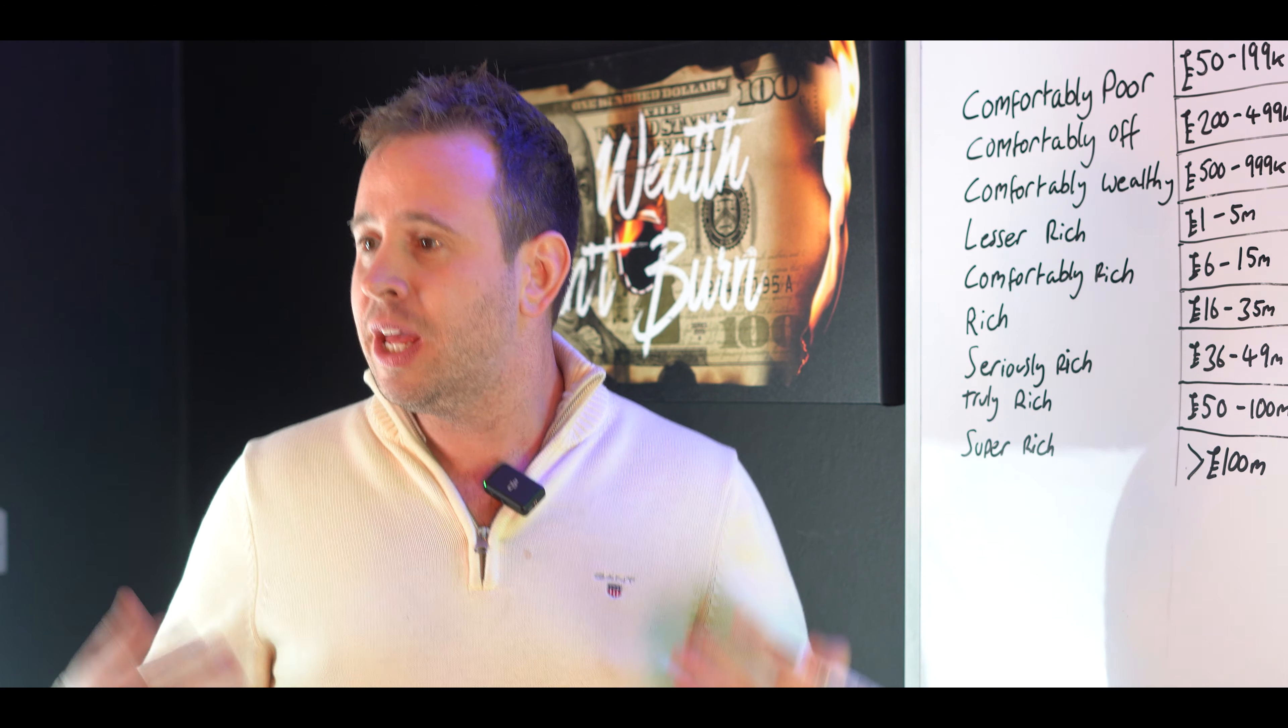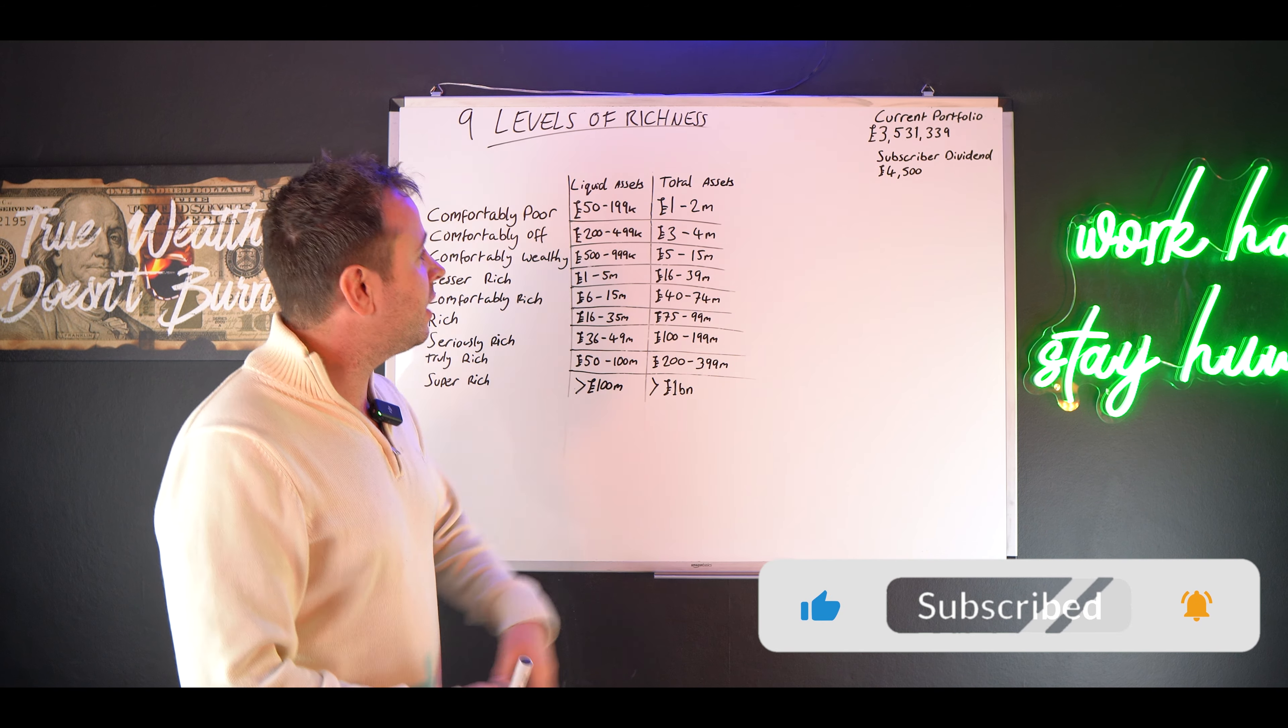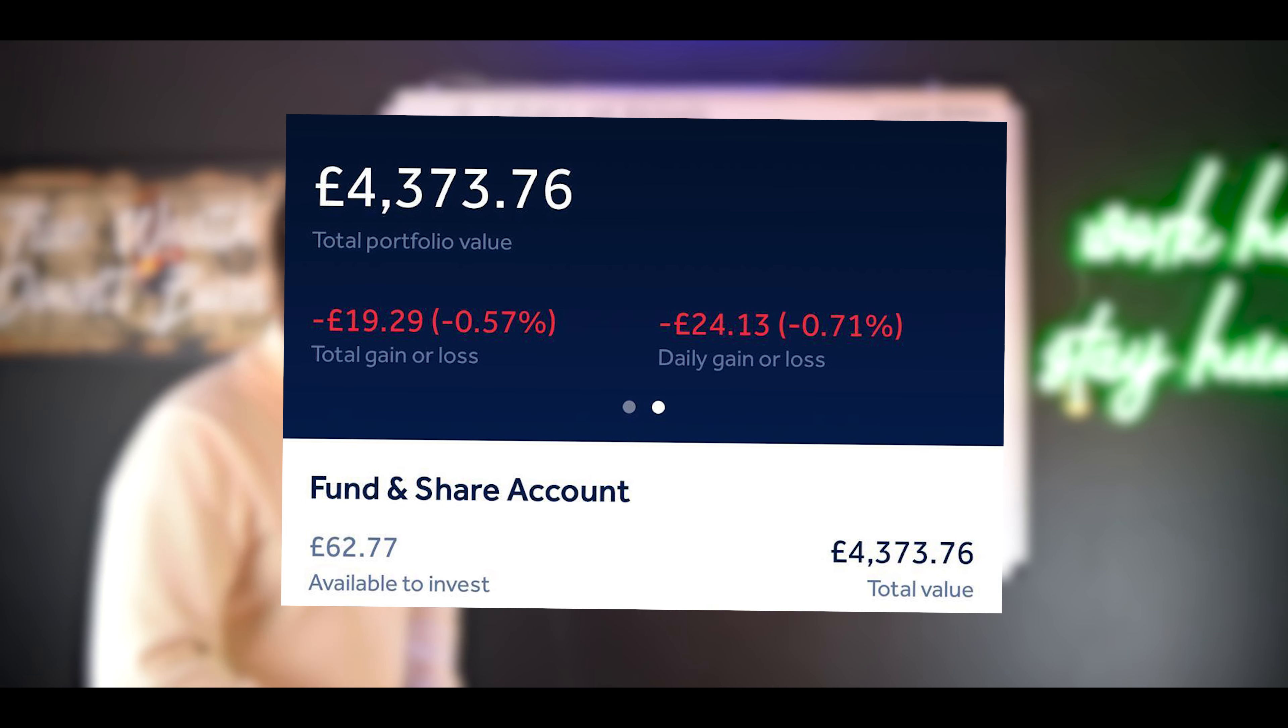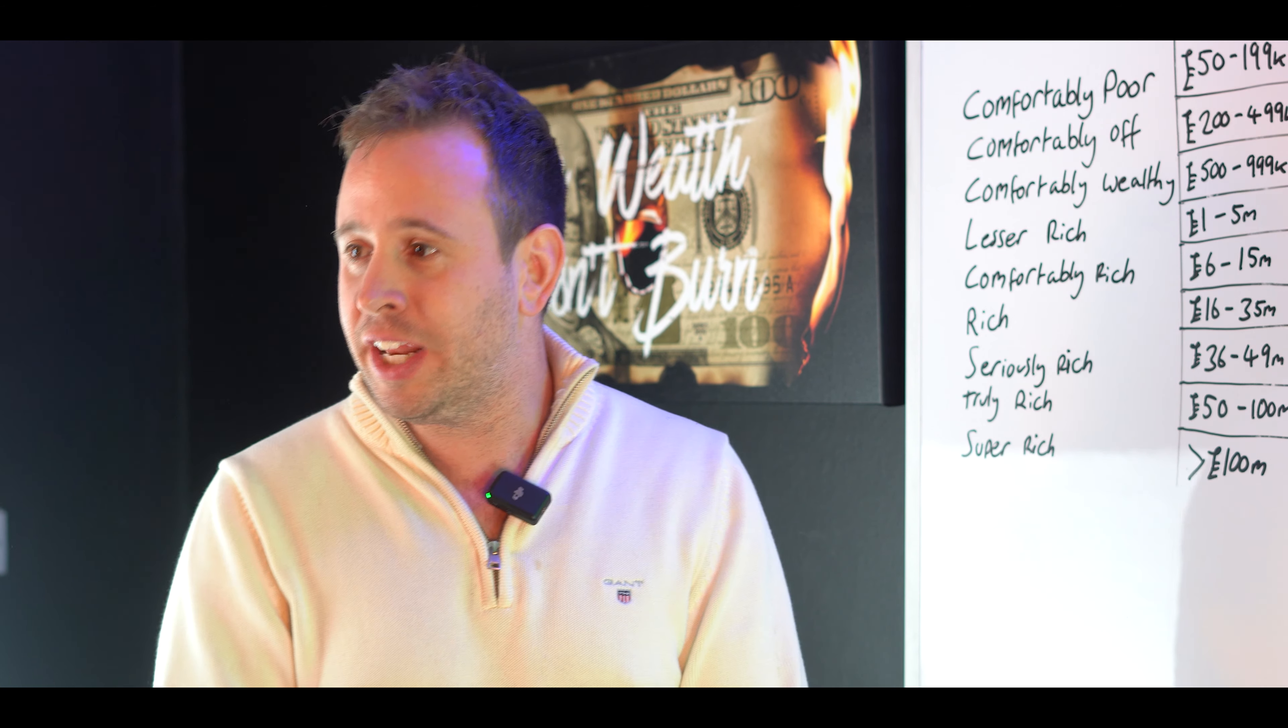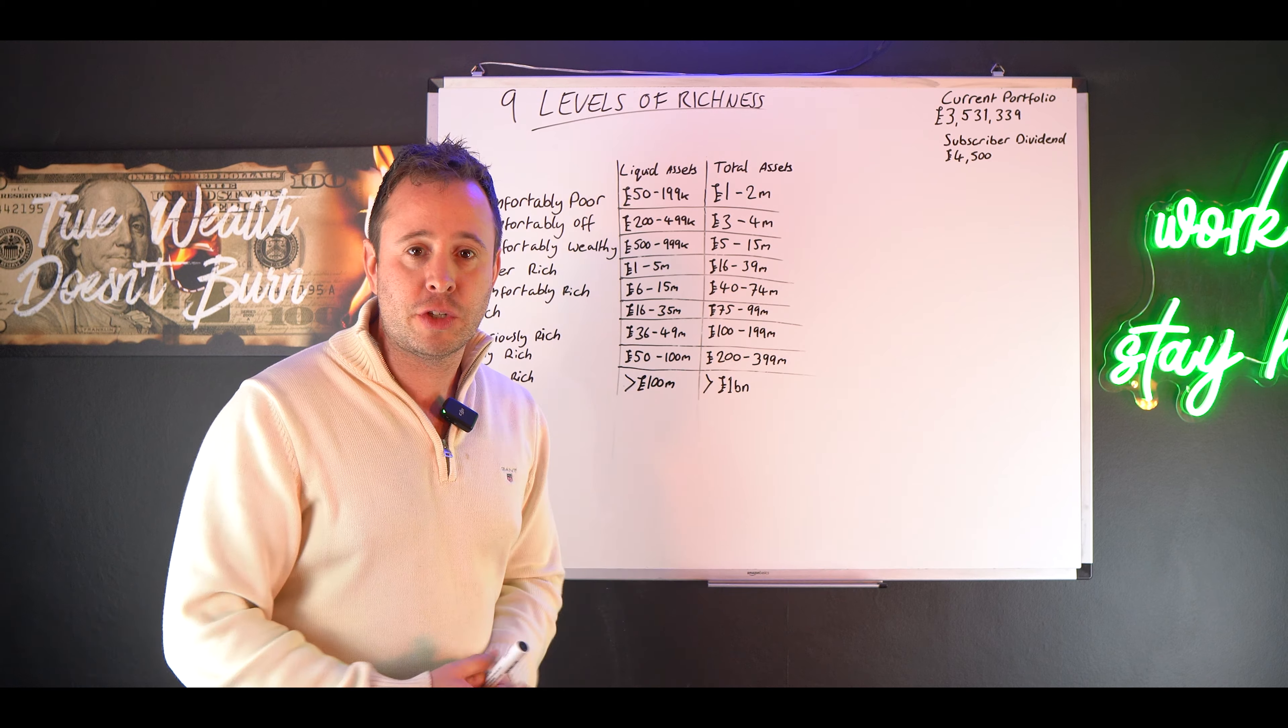So before we get into the video, if you like this sort of content about wealth creation, please give this video a big like and consider subscribing. We have our subscriber dividend portfolio, £4,500 something like that in there at the moment, and I'm putting an additional £2,000 in there every single month. We're going to pay the dividends out to the subscribers. All you've got to do is leave a comment and you'll enter automatically into that draw. We'll draw it about the 10th of every single month.